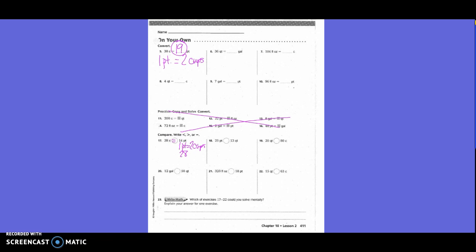So you guys are going to do 6, 7, 8, 9, 10, 18, 19, 20, 21, 22 with your partner. Number 23 right now. Which of the exercises 17 through 22 could you solve mentally? Explain your answer for one exercise.